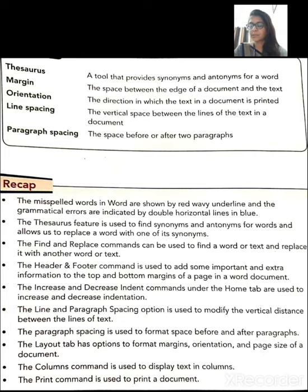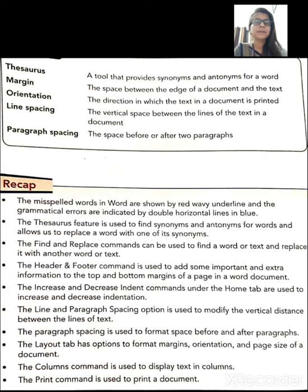Now some important topics of this chapter. The misspelled words in Word are shown by red wavy underlines, and grammatical errors are indicated by double horizontal blue lines. Agar aapne koi bhi spelling mistake ki hai, toh us particular word ke niche red underline ban jayegi. Aur agar koi grammatical mistake hai, toh woh blue line se underline ho jayega. Toh yeh tha spelling and grammar mistake ko kaise check kiya jata hai.